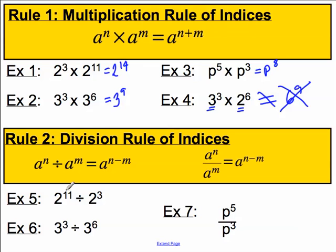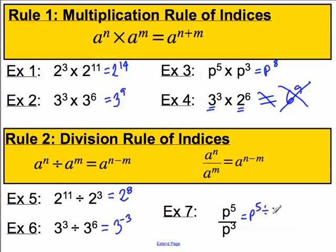Let's quickly do a few divisions. 2 to the 11 divided by 2 to the 3 — when dividing with the same base number, subtract the powers. This must be 2 to the power of 8. 3 to the power of 3 divided by 3 to the power of 6 must be 3 to the power of 3 minus 6, which is 3 to the minus 3. And the last one: p to the 5 over p to the 3 — that's p to the 5 divided by p to the 3, which is p to the power of 2. Thank you.